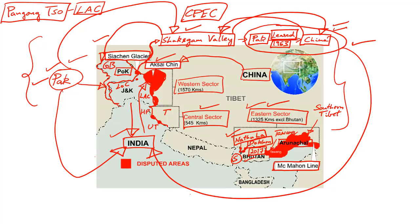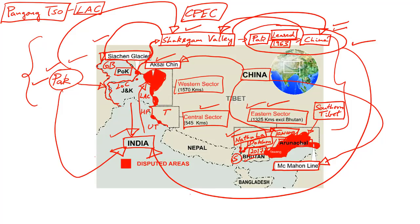In the Aksai Chin region, repeated border incursions and clashes have taken place between India and China, including the latest clash at the Panangso Lake, located at the Line of Actual Control. In the Central sector, we have the border between Tibet, Himachal Pradesh, and Uttarakhand, where unclear demarcation has also led to repeated incursions and clashes.